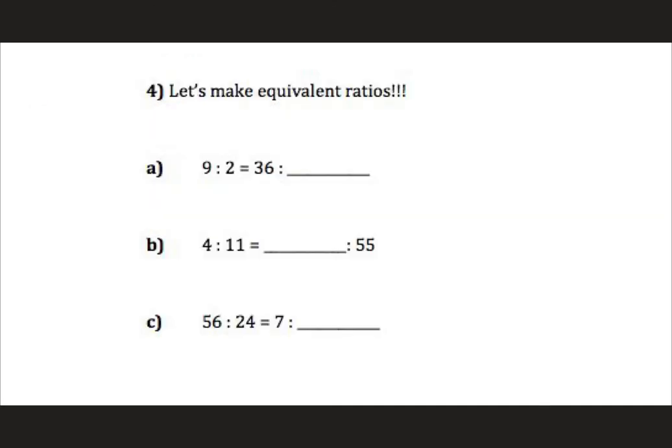Lastly, we're going to make some equivalent ratios. Once again, ratios are just like fractions in that whatever you do to one term, you have to do to the other. So nine to two is equal to 36 to what? How do we get from a nine to a 36? We multiply by four. So we multiply two by four also. And we get 36 to eight. Four to eleven is equivalent to what to 55? How do we get from 11 to 55? Multiply that by five. So we multiply four by five and we get 20.